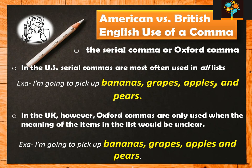In the United States, serial commas are most often used in all lists. For example: I am going to pick bananas, crabs, apples, and peas. In this sentence, you can see the comma is already used before 'and' — before 'peas.' You can see the comma is used after 'apples.' That is the American English style.